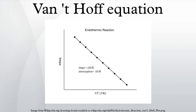Differentiation of this expression with respect to temperature yields the Van't Hoff equation. Provided that ΔH° and ΔS° are constant, this equation gives ln K as a linear function of 1/T, known as the linear form of the Van't Hoff equation. When the temperature range is small enough, a plot of the natural logarithm of the equilibrium constant versus the reciprocal temperature gives a straight line. The slope multiplied by the gas constant R gives the standard enthalpy change, and the intercept multiplied by R gives the standard entropy change.